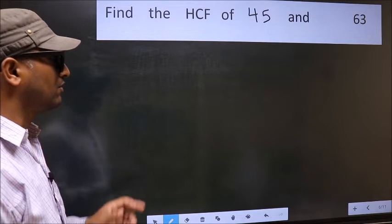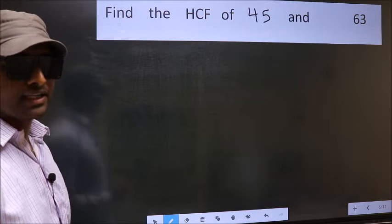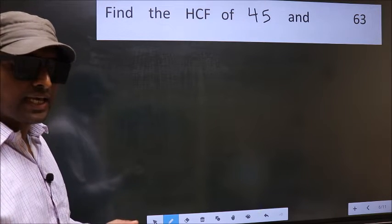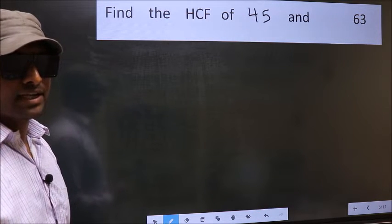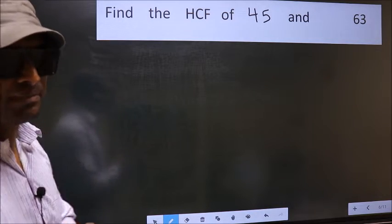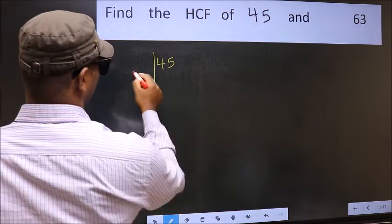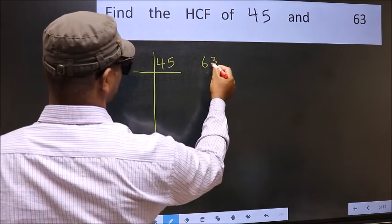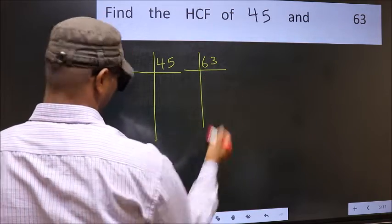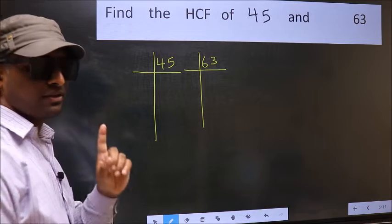Find the HCF of 45 and 63. To find the HCF, we should do the prime factorization of each number separately. What I mean is 45 and 63. This is your step 1.